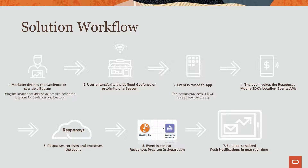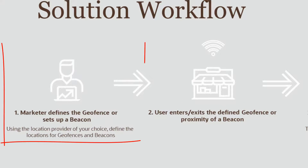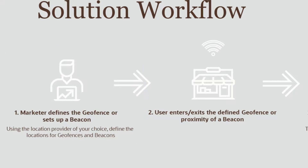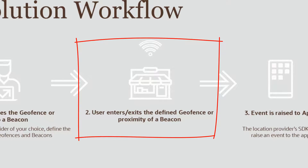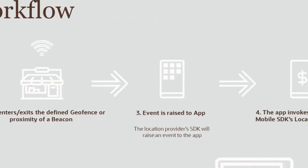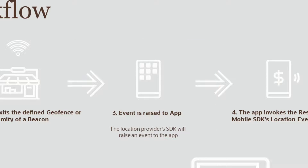To provide more context, here's a broad overview of the solution's workflow. First, a marketer defines the locations to set up geofences and/or beacons. When an app enters or exits a geofence or is in proximity of a beacon, an event is triggered. On the user's mobile device, the location provider's SDK will raise an event.